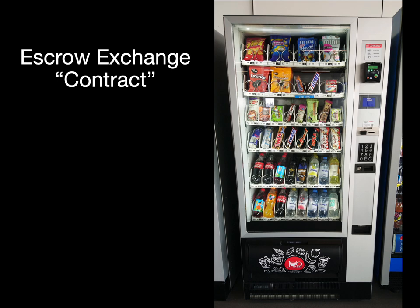The snacks are already visibly escrowed from the seller, displayed to the prospective buyer so they can see what choices are already in escrow. When the buyer puts in the money, the vending machine now has in escrow everything it needs to enforce the terms of the contract. When both the snack and the money are escrowed, it can make the snack available to the buyer and the money available to the seller. This is a good example of offer safety, which is that each of the parties to the exchange either gets what they said they want or gets a full refund of everything they had placed into escrow. A well-functioning vending machine, if it fails to give me the snack I asked for, I can hit the refund button and get back everything I had escrowed.